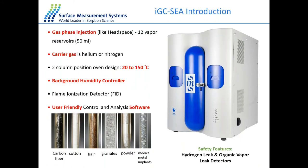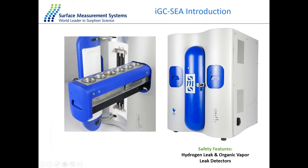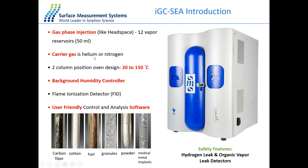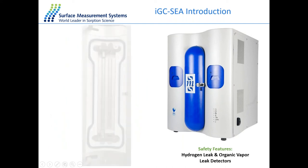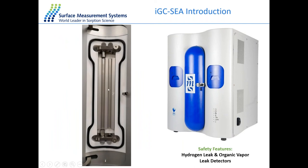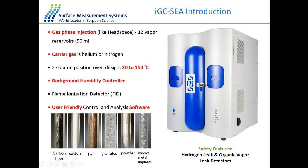The basic IGC procedure: pack the column with the sample of interest, select different probes for different interactions — non-polar probes for dispersive surface energy, polar probes for specific interactions — and inject probe molecules at different concentrations. From the detected signal, calculate the surface properties of the solid inside the column. The IGC instrument injects all solvents directly from the gas phase. It can hold 12 solvents simultaneously — six on each side — with helium or nitrogen as the carrier gas. The column oven ranges from 20 to 150°C, there are two sample positions running in sequence, and the detector is an FID, very sensitive for organic vapors, with automatic hydrogen or organic vapor leak detection for safety.